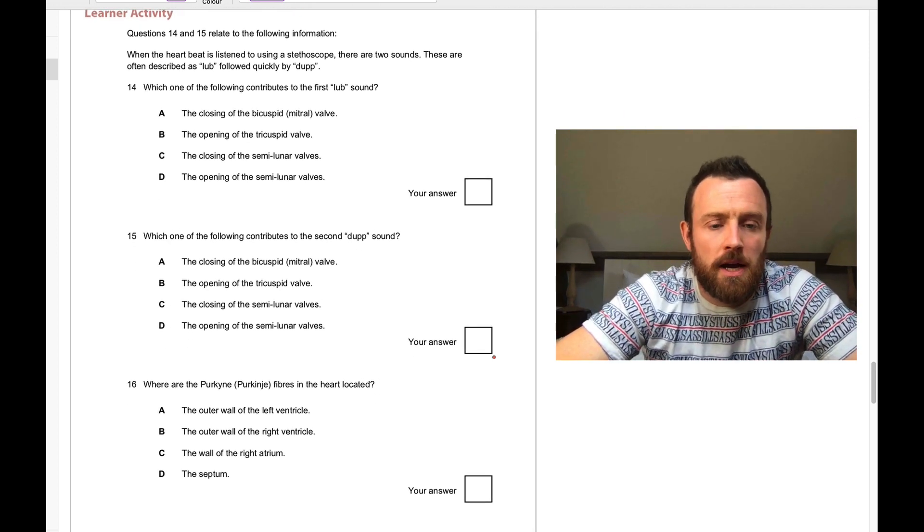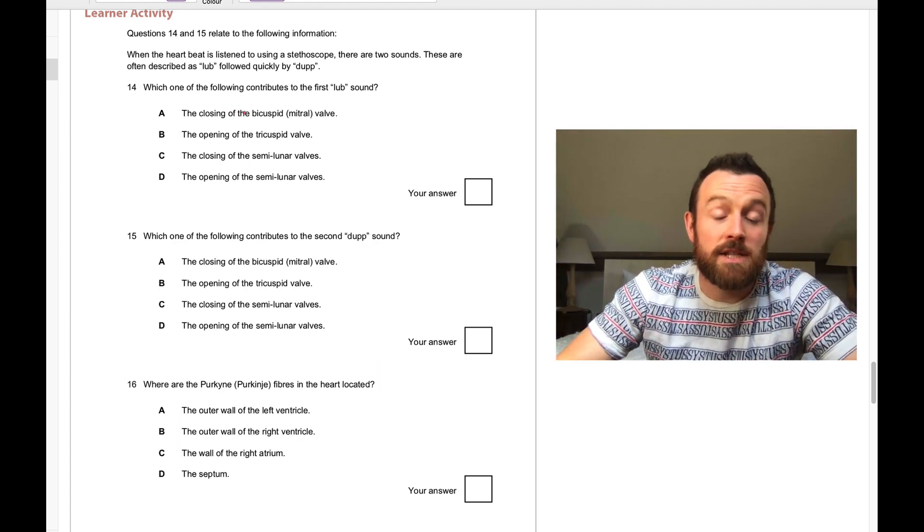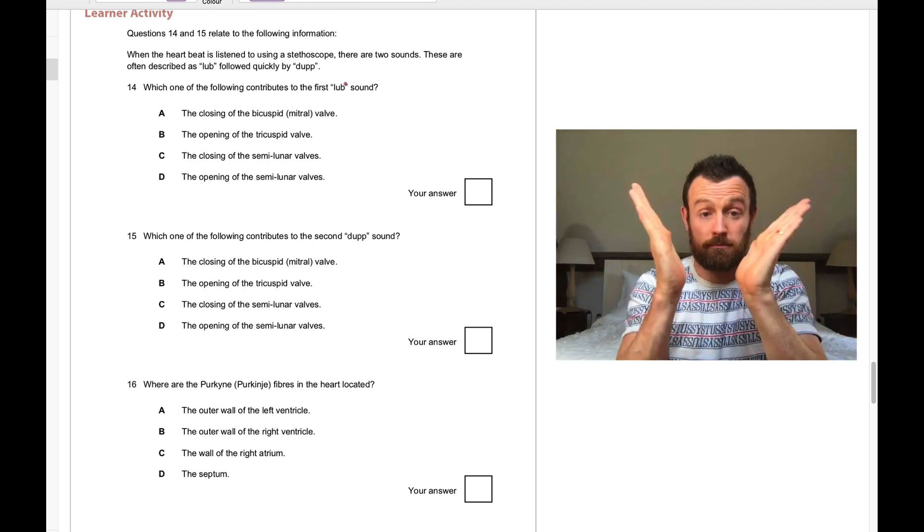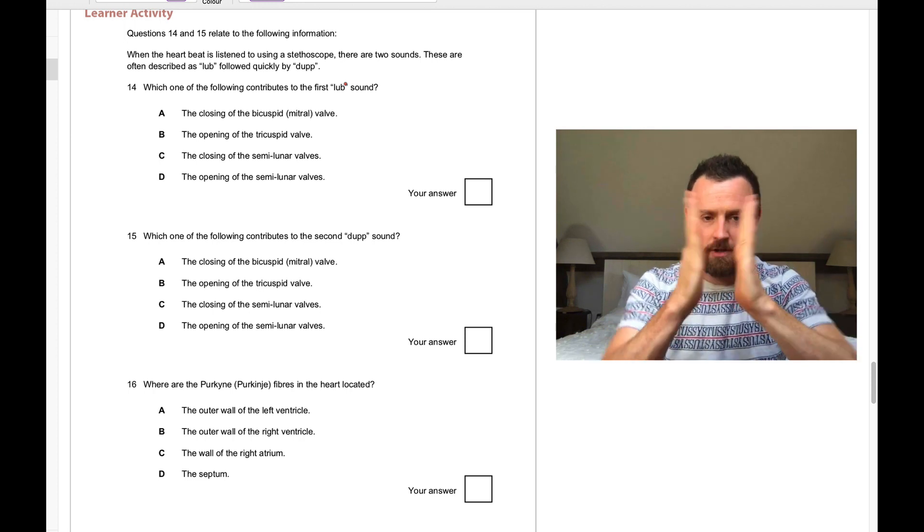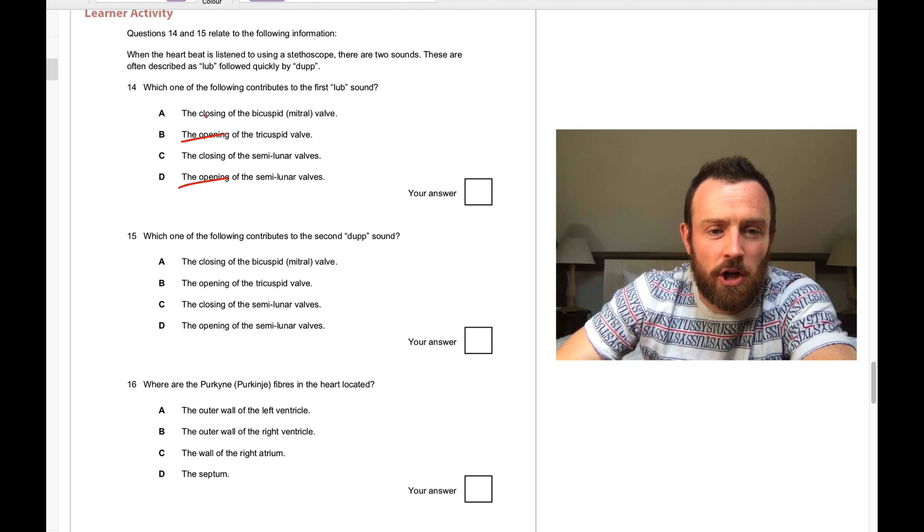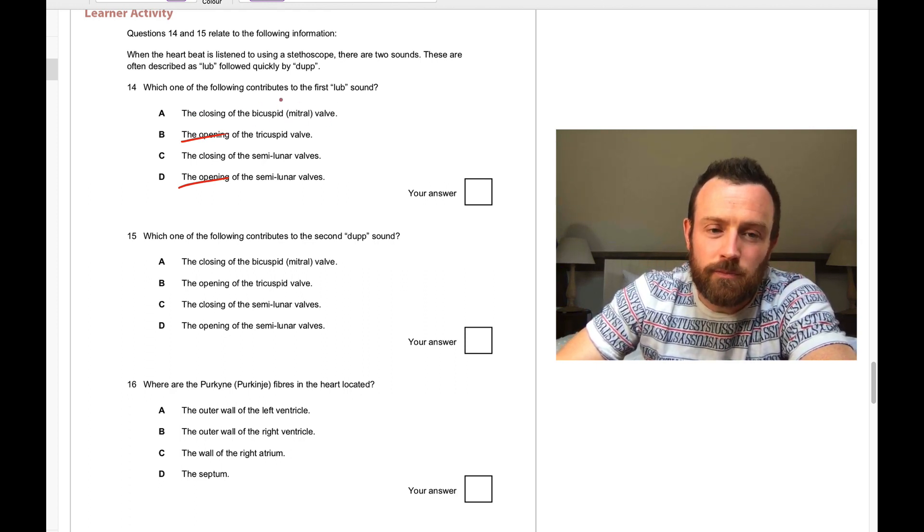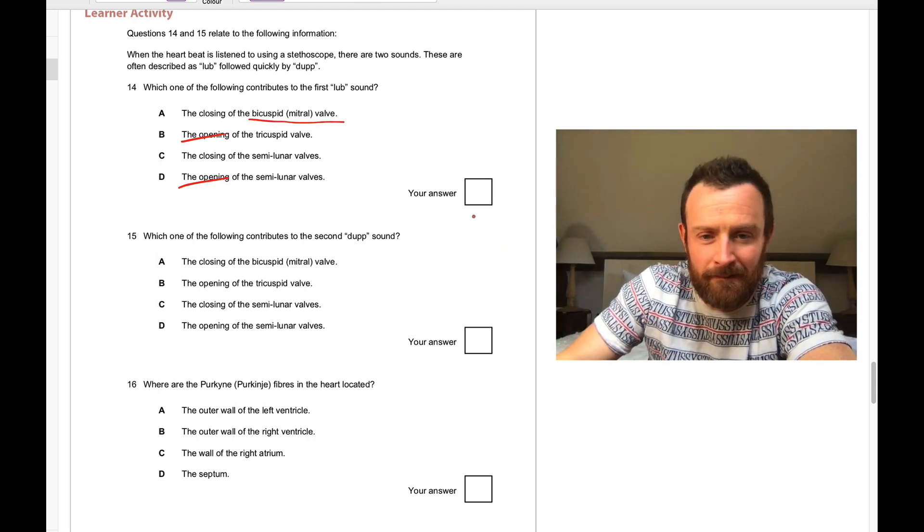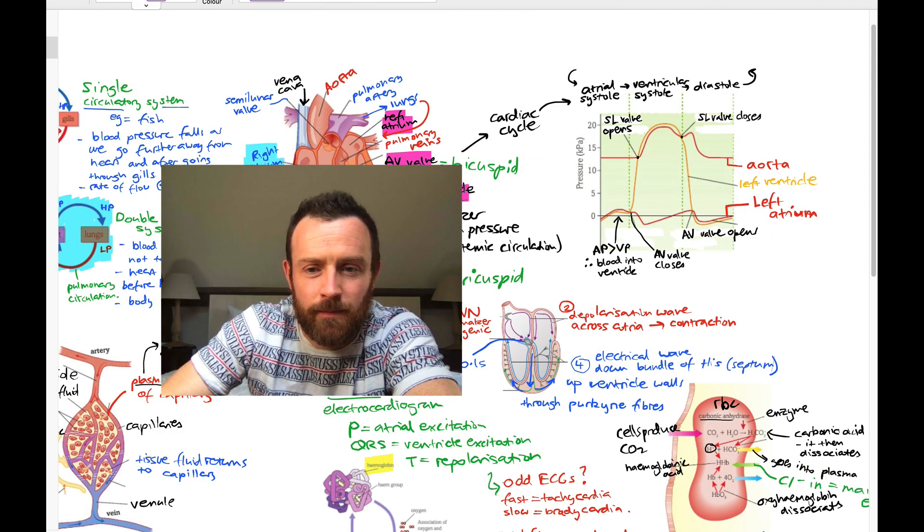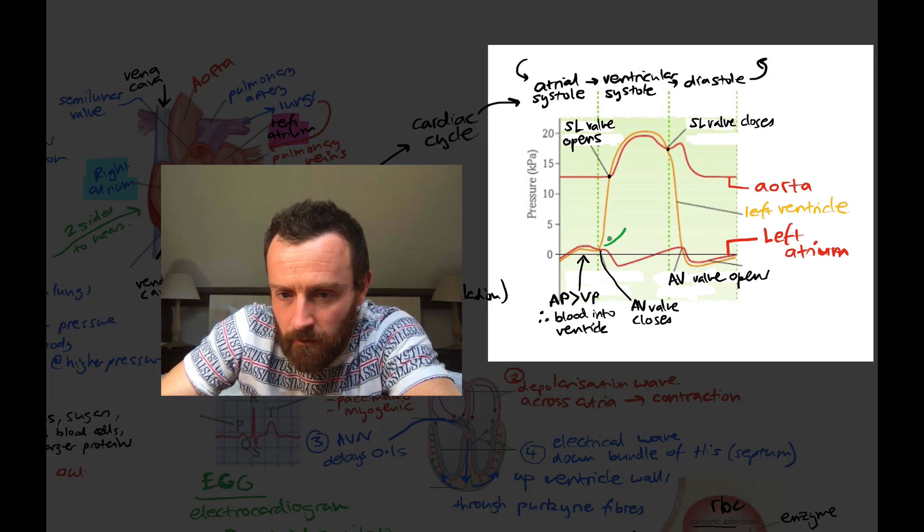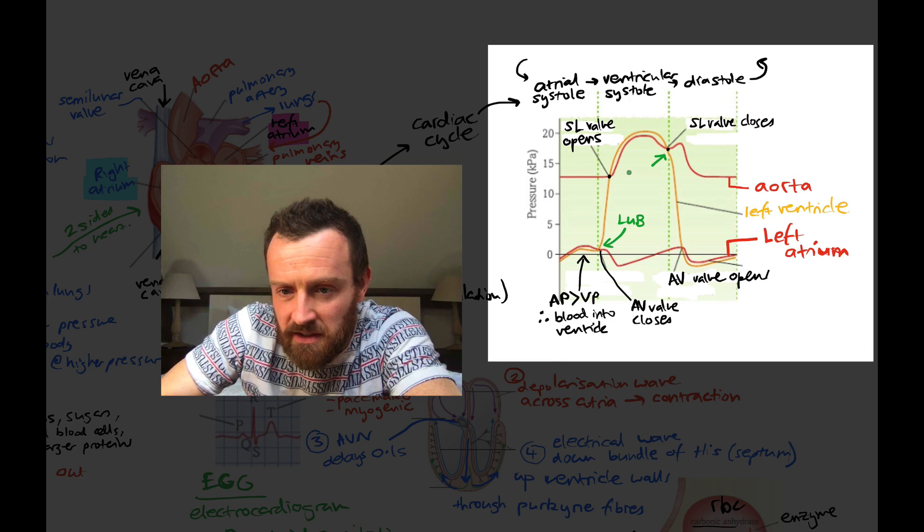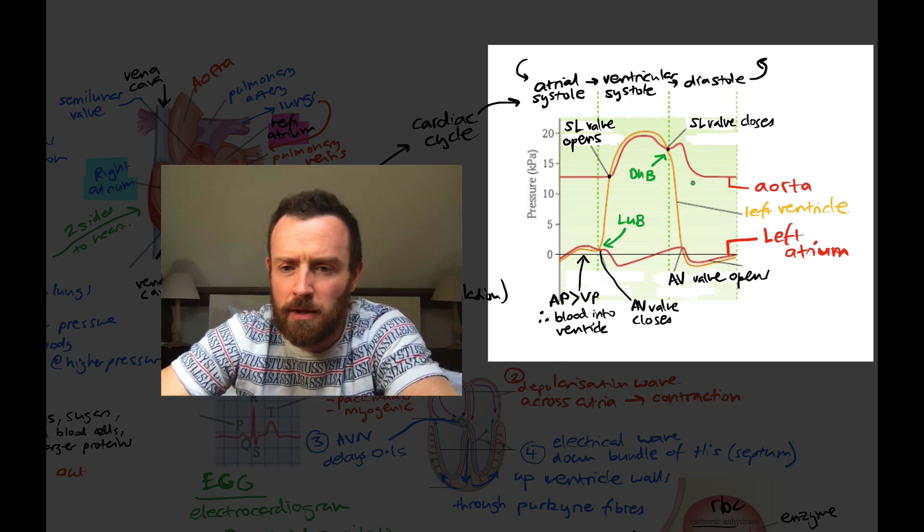Questions fourteen and fifteen. Lub-dub. The lub is the response of the first closing of the valve. So both of the sounds are caused by closing of valves, not opening of valves. When they shut, it makes a noise every time it closes. So definitely not opening. Which one is it? Closing of the bicuspid or is it the semilunar? The first lub is this one, closing of the bicuspid valve. So that's A. And the second one, the dub sound, is the closing of the semilunar valves. That's C. I think I should put that on the mind map. So this one here is the lub, and this one here is the dub.